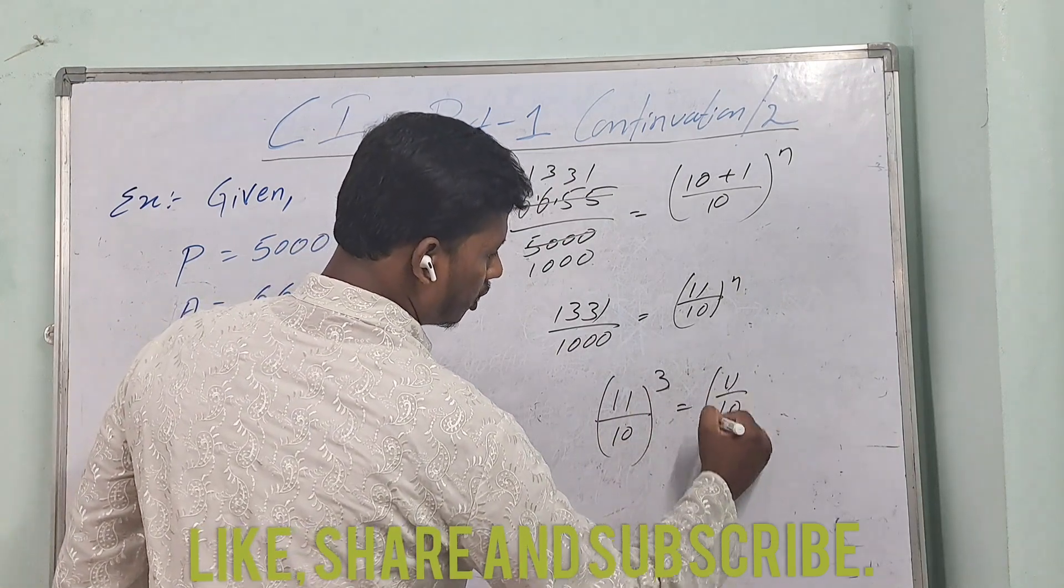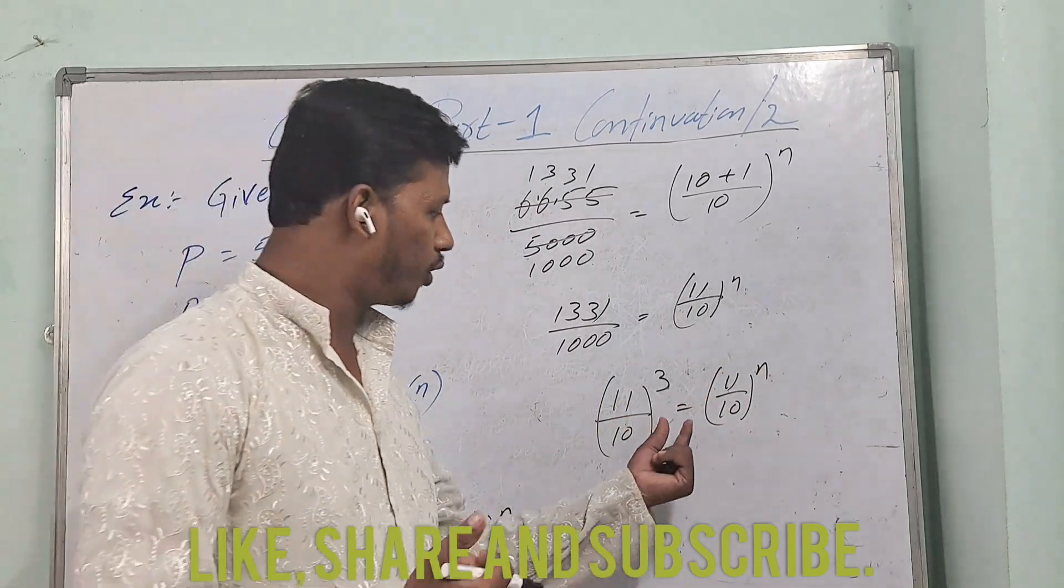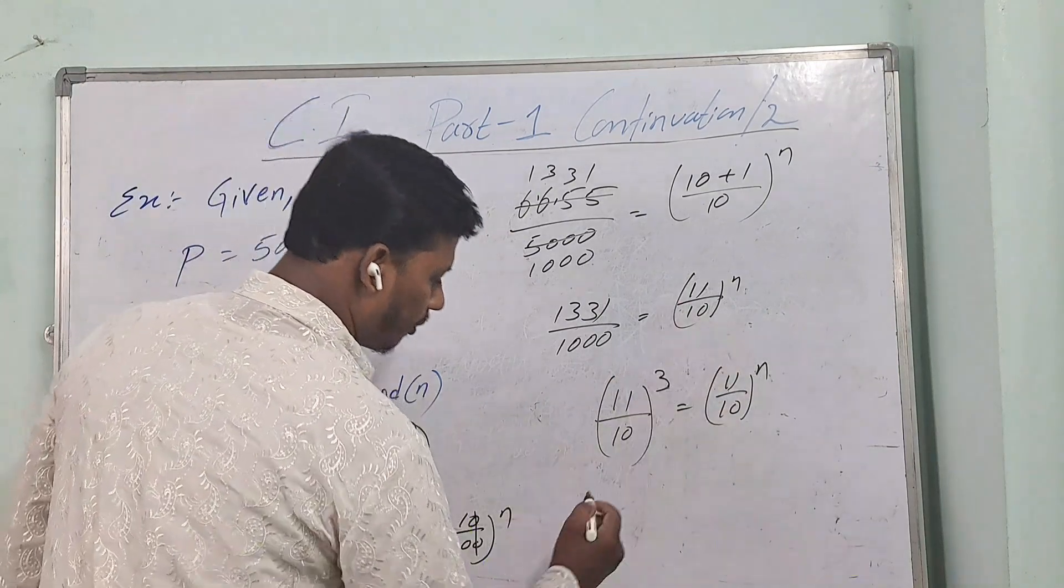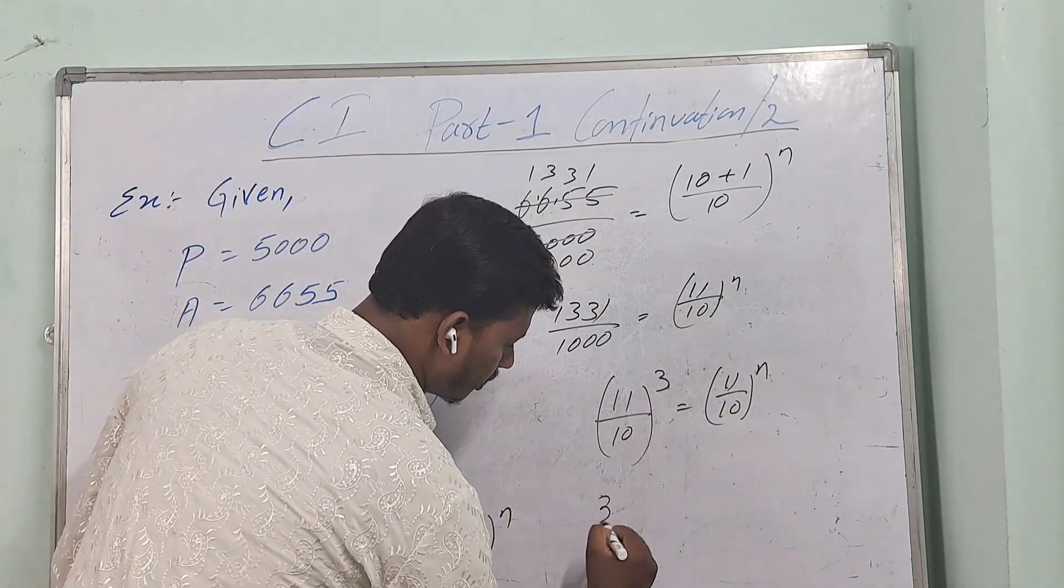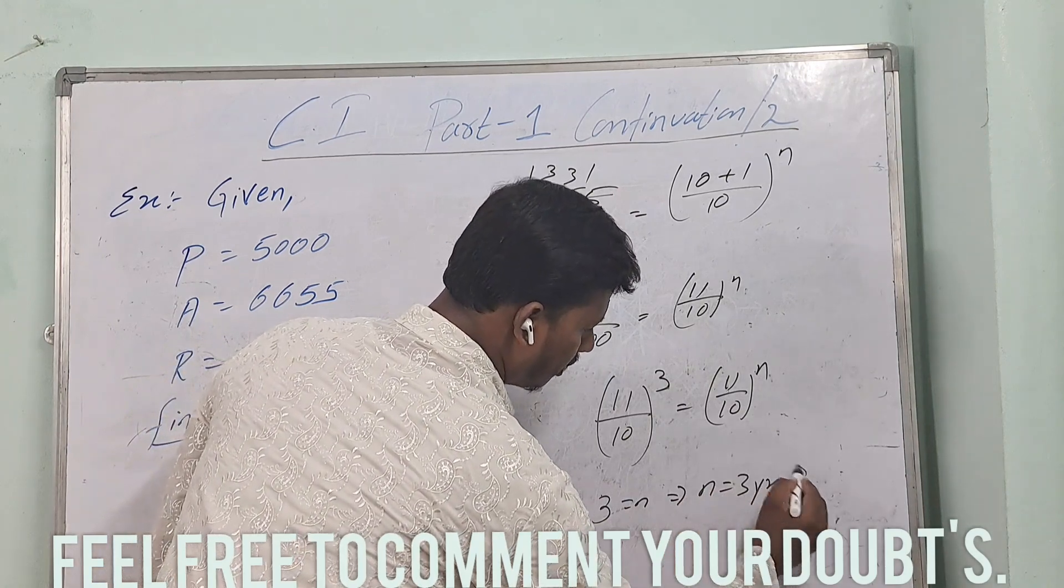When bases are same and if we have equal to sign between the two bases, then we have to equate the power. Equate the power means just we have to take the powers. Therefore 3 is equal to n, that implies n is equal to 3 years. Therefore in 3 years, 5000 will become 6655.